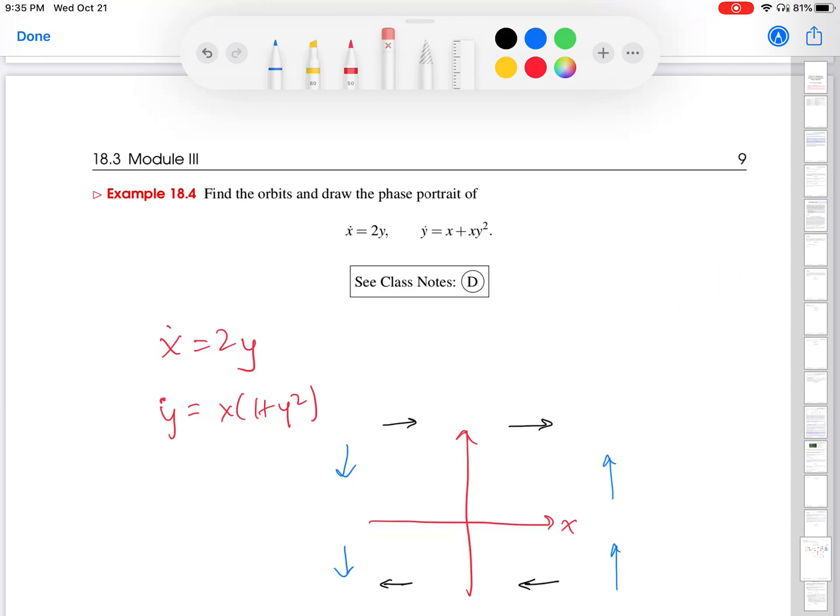All right. So if I piece these together, you can kind of tell what's going on in each one of these quadrants. So in this first quadrant over here, we are moving up and then to the right. So whatever our solution looks like, it should be going effectively up and to the right. So that way. All right.